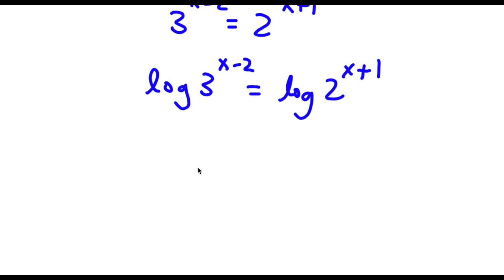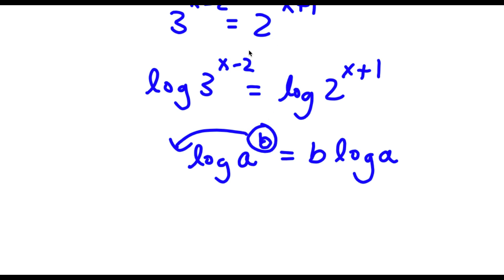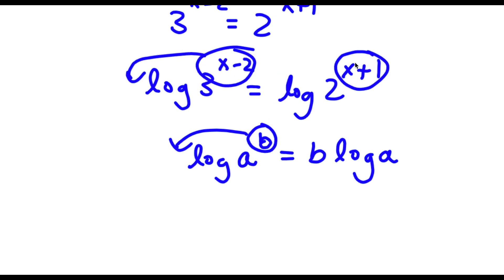Now if I have something in the form log a to the power of b, I can simply move this exponent b to the front of the logarithm. So this is going to equal b times log a. So in this case I can move both x minus 2 to the front as well as x plus 1 to the front.